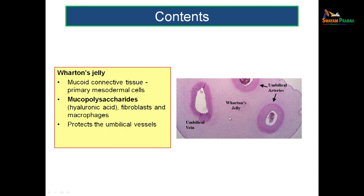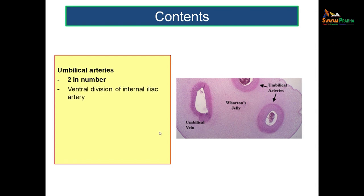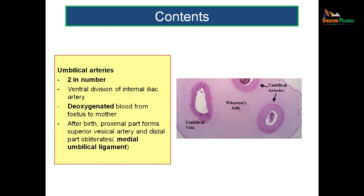The umbilical arteries are 2 in number, derived from the ventral division of the internal iliac artery; though called arteries, they carry deoxygenated blood from the fetus to the mother. After birth, the proximal part becomes the superior vesical artery supplying the bladder, and the distal part obliterates to form the medial umbilical ligament.